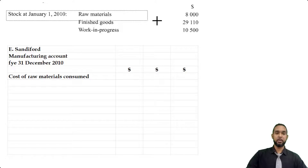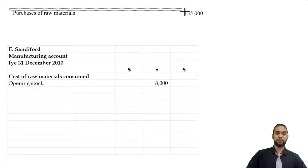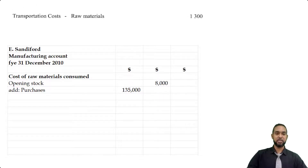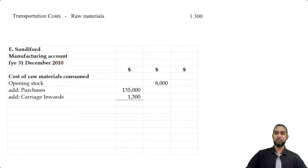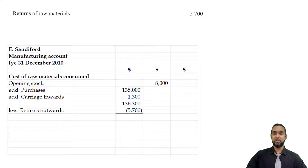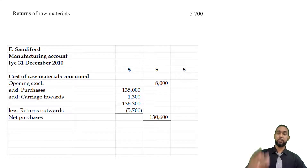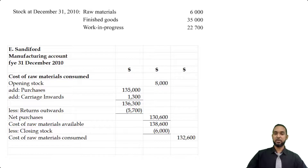We start with the cost of raw materials consumed. We need the opening stock of raw materials of $8,000, then purchases of $135,000. We adjust for transportation costs on raw materials — carriage inwards of $1,300 — and subtract the returns of raw materials. That gives us net purchases, which when added to opening stock gives the cost of materials available for use. Subtracting the closing stock of $6,000 gives us the cost of materials consumed — that's the direct materials.